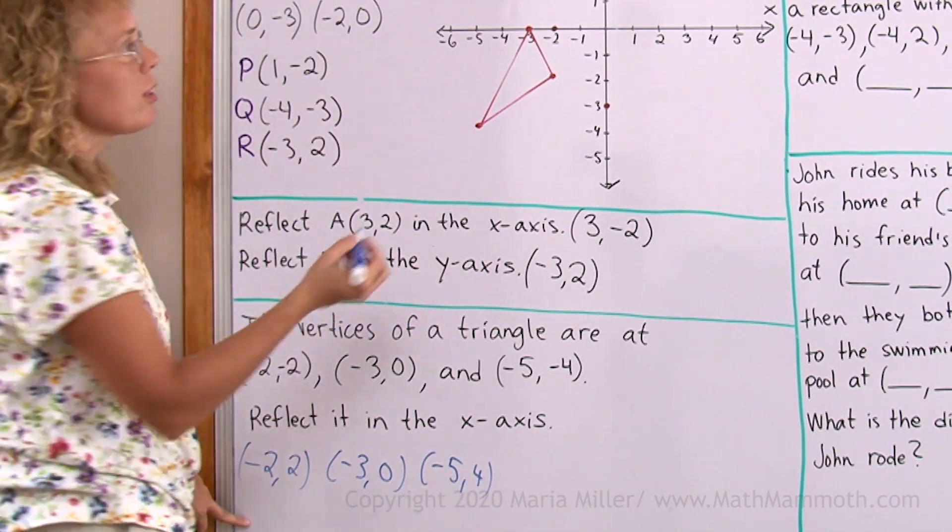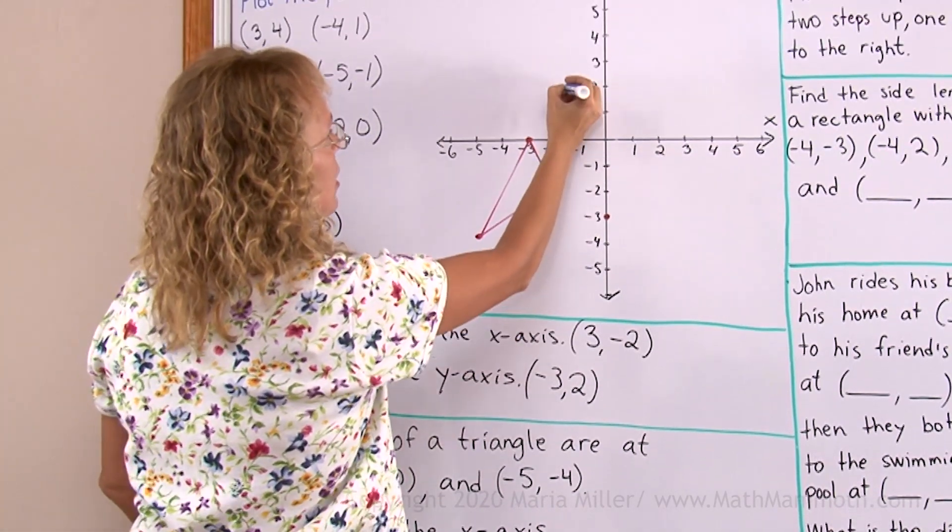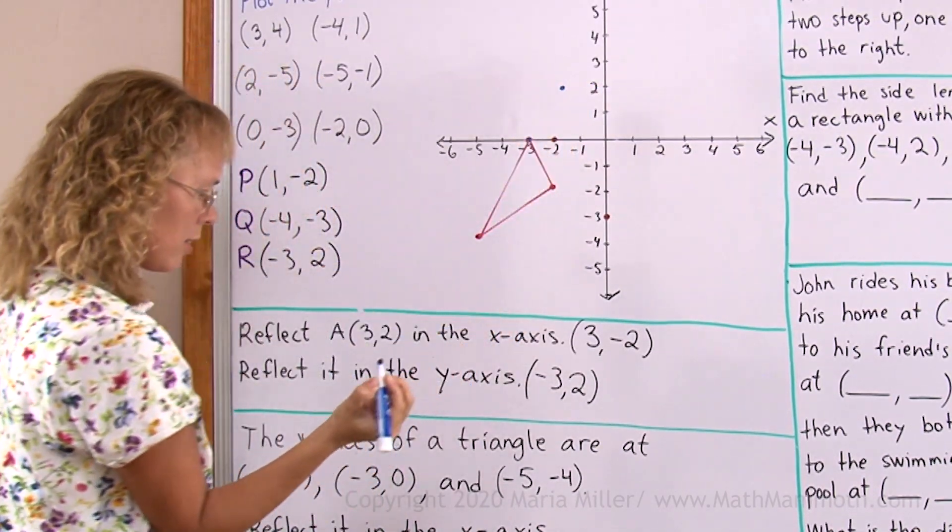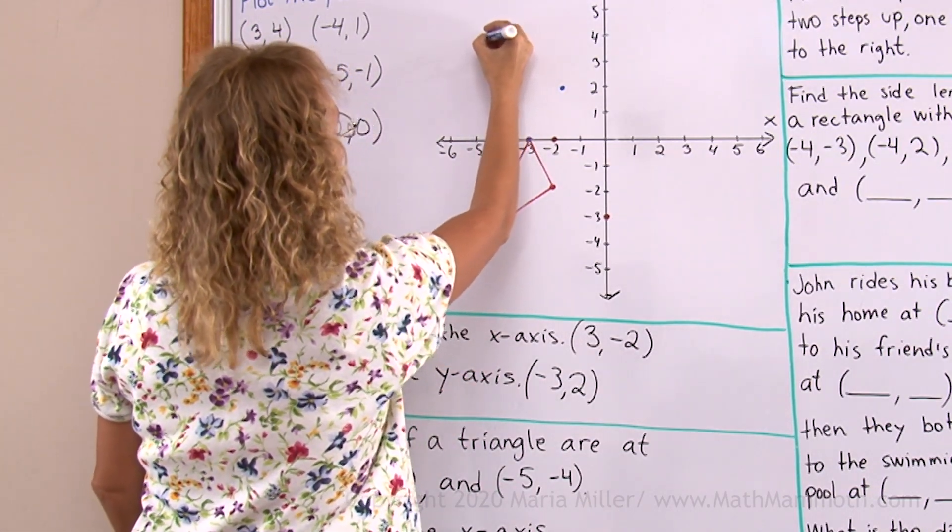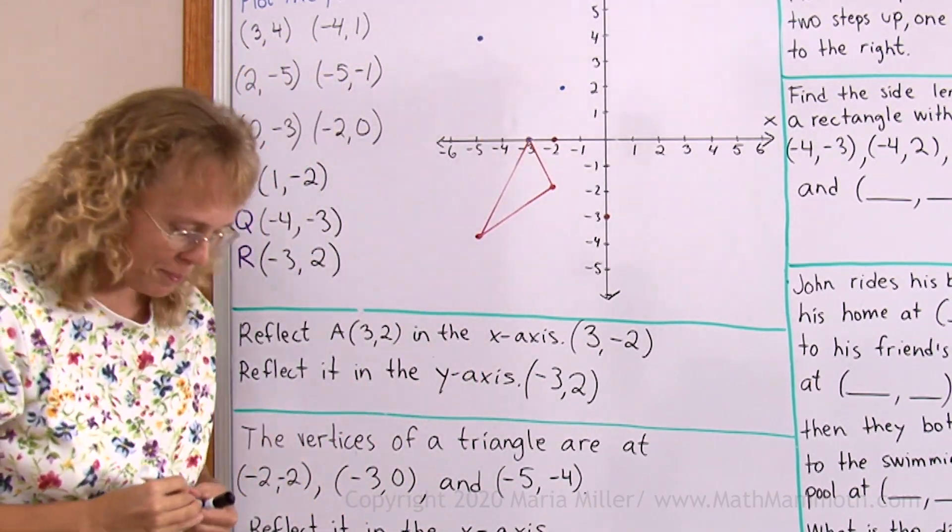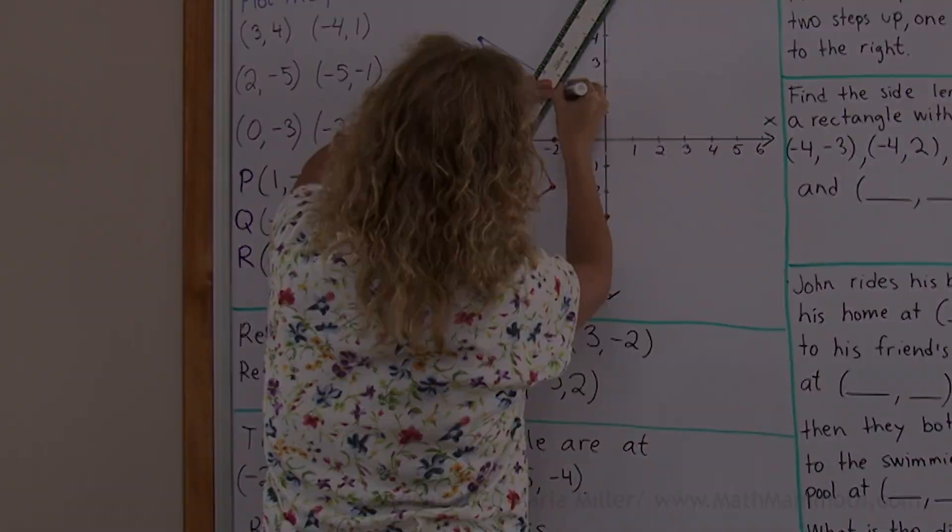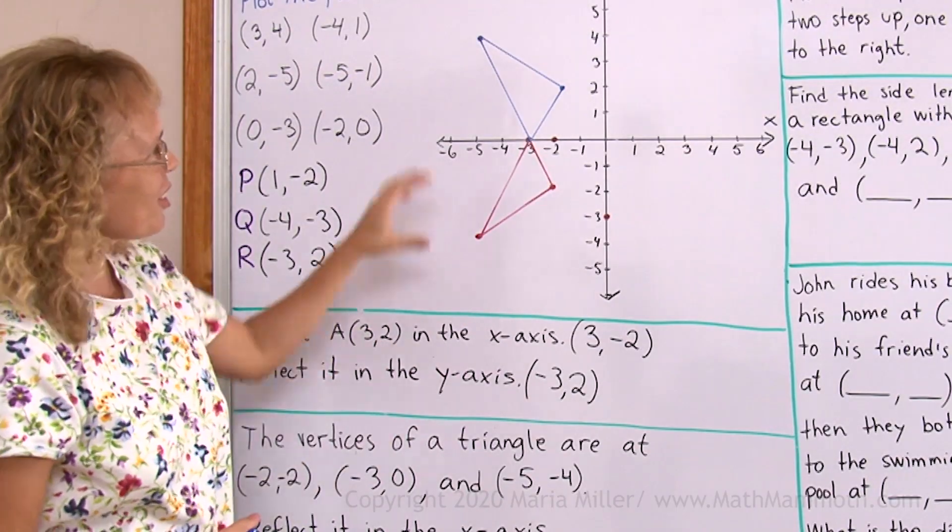Let me plot these points. (-2,2). And this is the same point. And then (-5,4). Somewhere there. Now let's draw this triangle. There. Looks good.